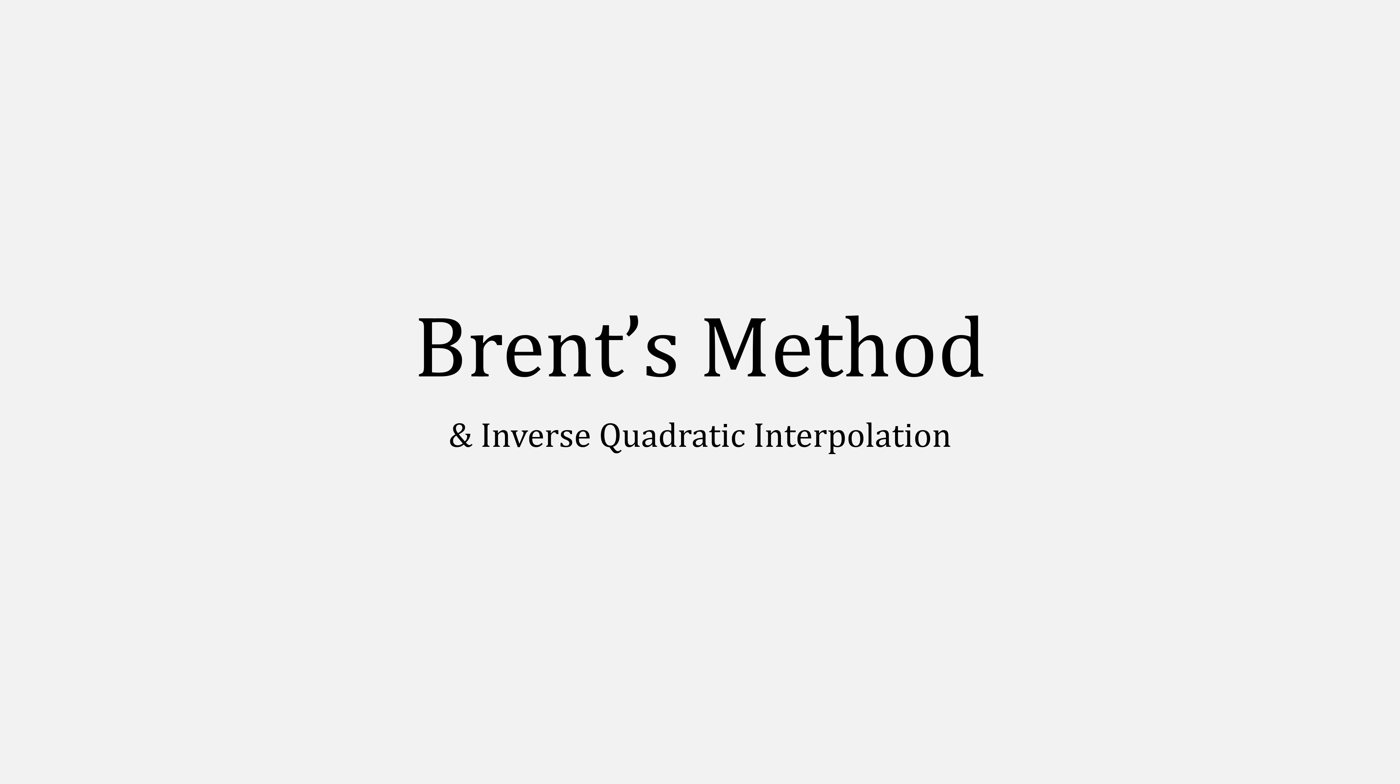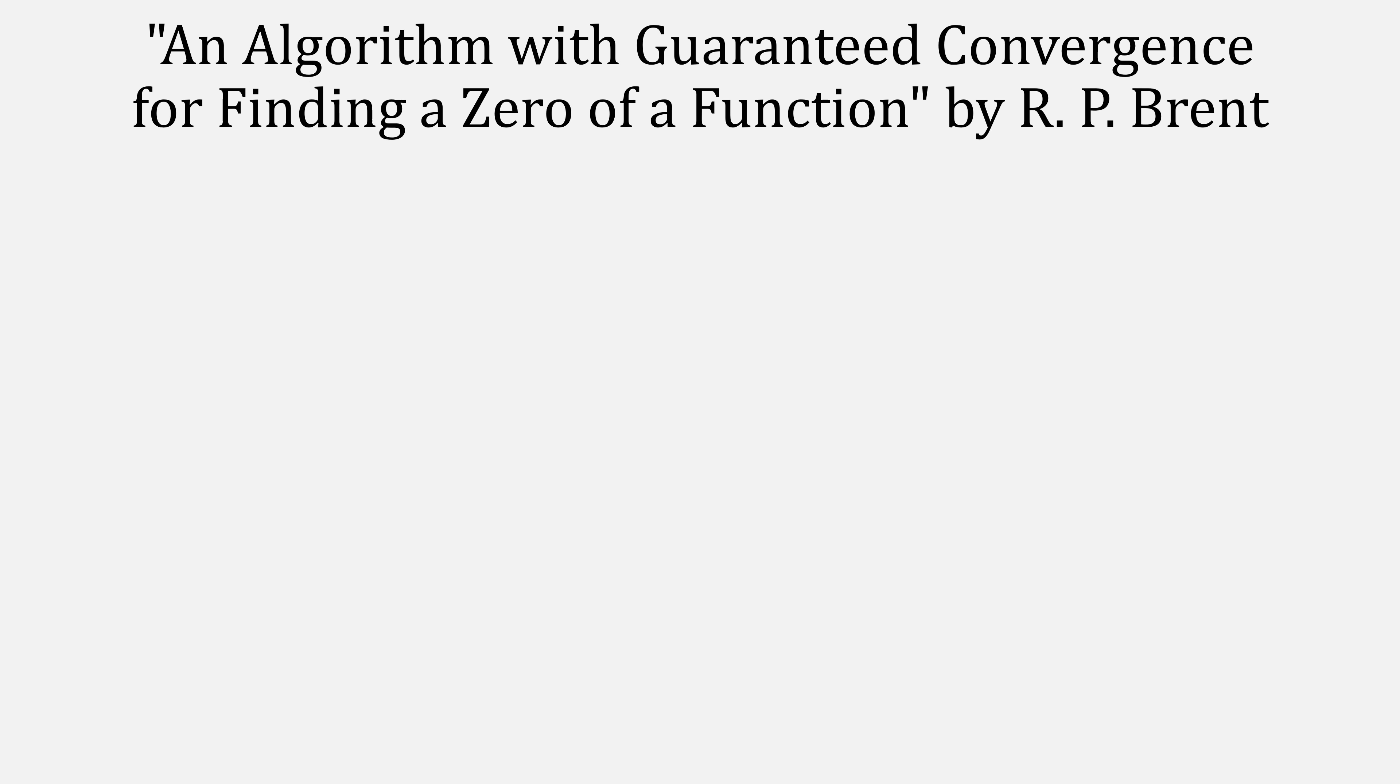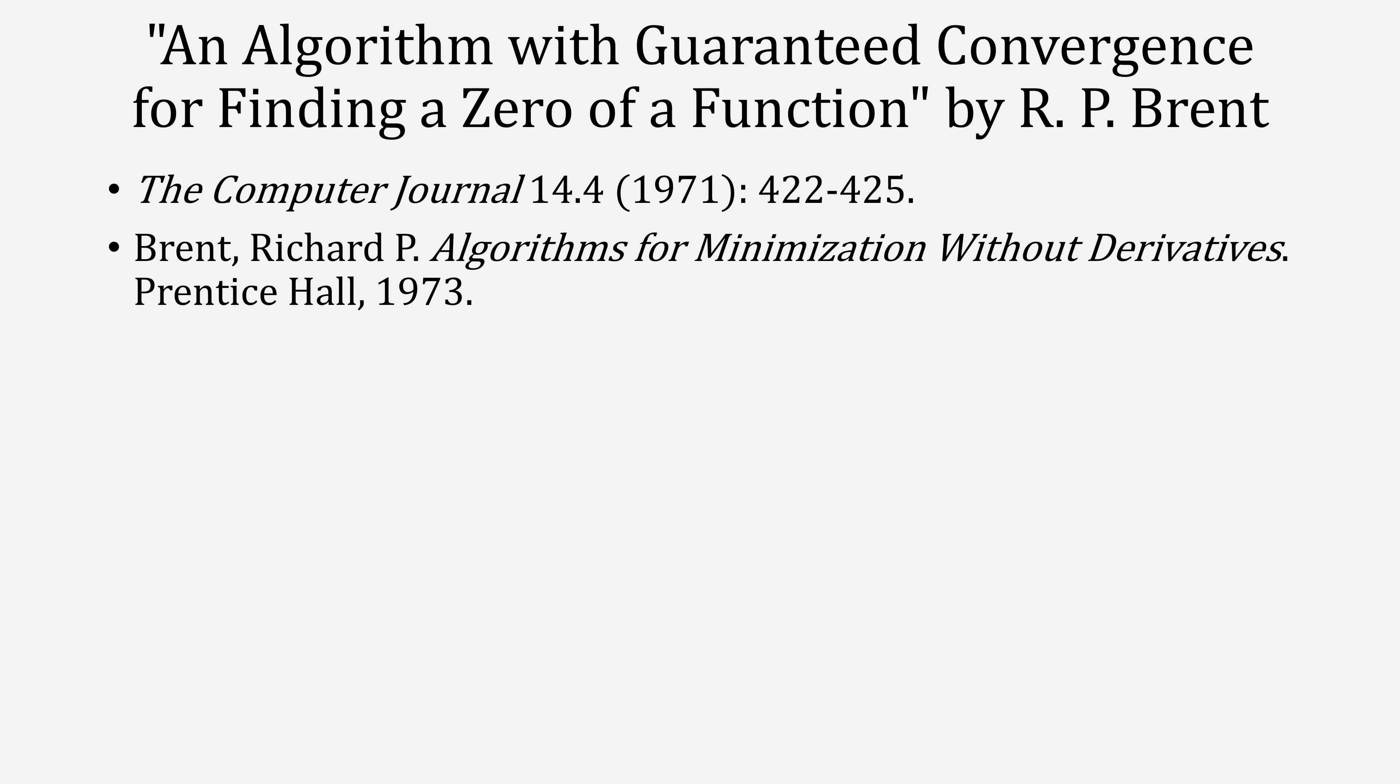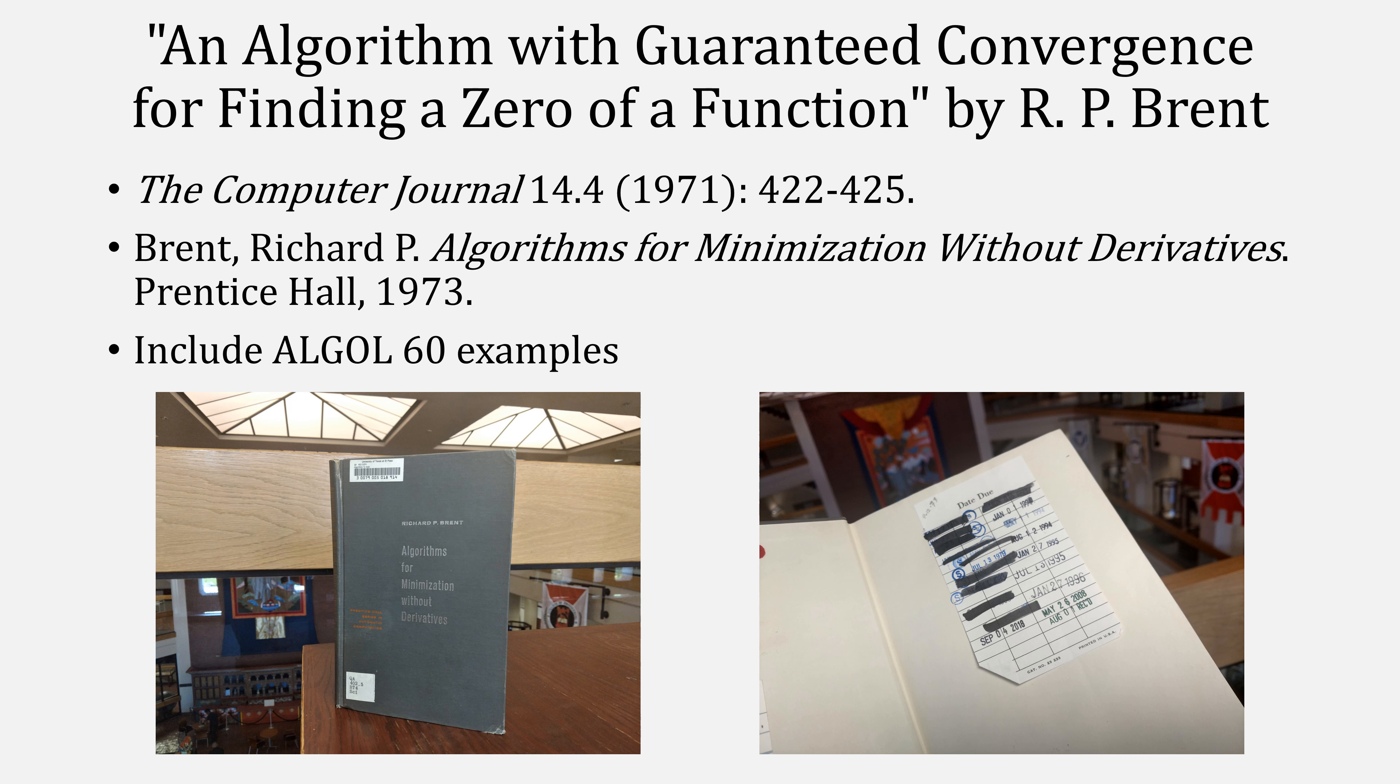Brent's method builds heavily on the work by Dekker, which is sometimes why it's called the Brent-Dekker method. It was first published in An Algorithm with Guaranteed Convergence for Finding a Zero of a Function in the Computer Journal in 1971, which you could read online. He also published it in a book, Algorithms for Minimization Without Derivatives in 1973, which includes Algol examples as well. This is my university's copy of that book, which has been checked out a lot more than the other book. In the preface, he thanks George Forsyth twice.